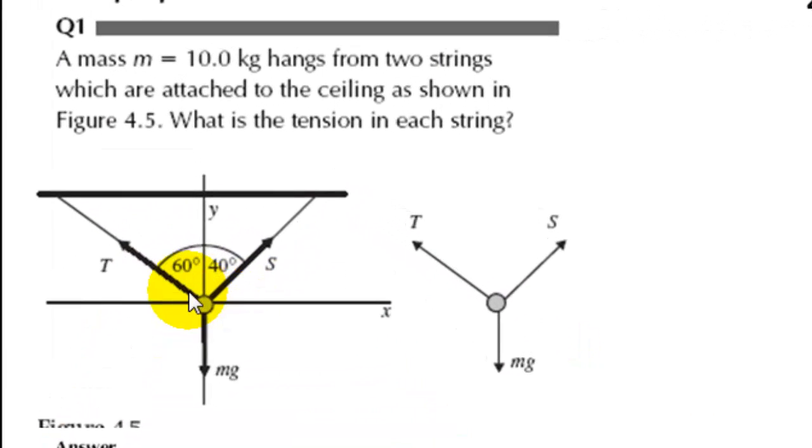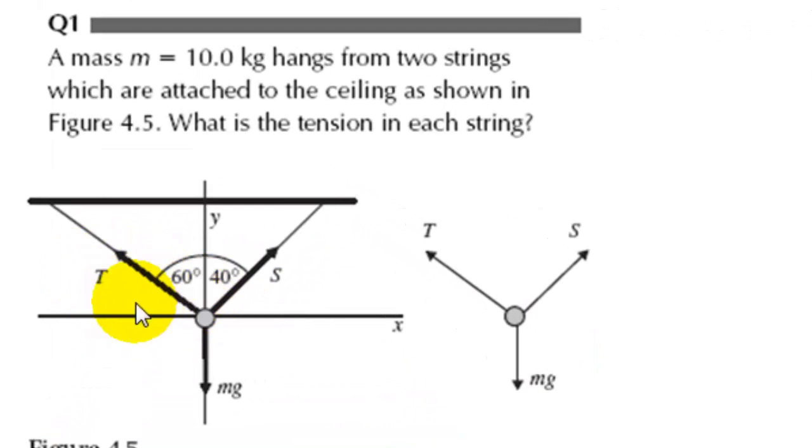Here you have to find the forces of tension T and S. You have to remember that this is a 10 kilogram weight so you can work out MG. You know the vertical components of T and S added together will equal MG. We know that the horizontal component of T will cancel with the horizontal component of S because all the forces will add up to zero.